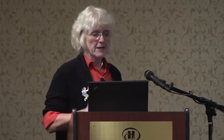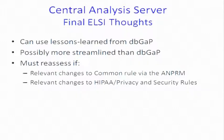My final comments: first, I think there are a lot of lessons from dbGaP we can learn, not only for this model but for other models — both what has worked and what has not worked. Second, I think this model, if you can get buy-in to it, is actually more streamlined than dbGaP and safer from an ELSI perspective, because you're not giving out individual data. And we must constantly reassess this, not only for the advance notice of proposed rulemaking which should change the Common Rule, but also potential changes for HIPAA.